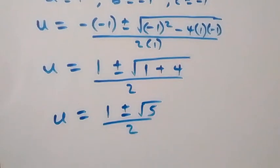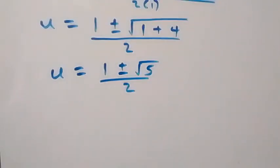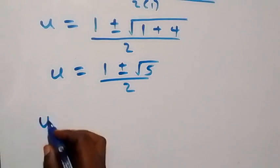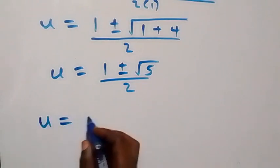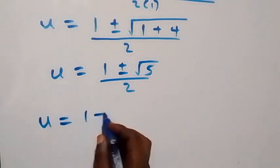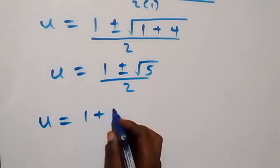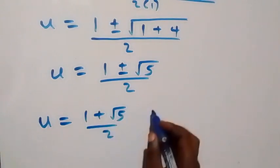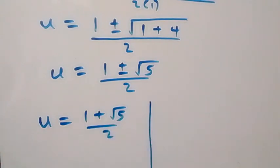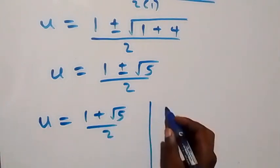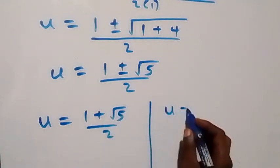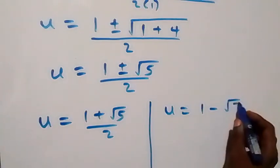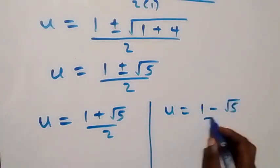So we have two cases for u: either u equals (1 plus root 5) over 2, or u equals (1 minus root 5) over 2.